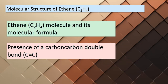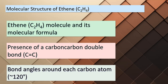Today we're delving into the fascinating world of molecular structure, focusing on the intriguing compound ethene with the molecular formula C₂H₄. Ethene's structure is truly captivating, as it contains a carbon-carbon double bond, symbolized as C=C. What's even more remarkable are the bond angles around each carbon atom, which are all approximately 120 degrees. This suggests a specific type of hybridization called sp² hybridization, which allows carbon atoms to form sigma bonds with other carbon atoms and hydrogen atoms.